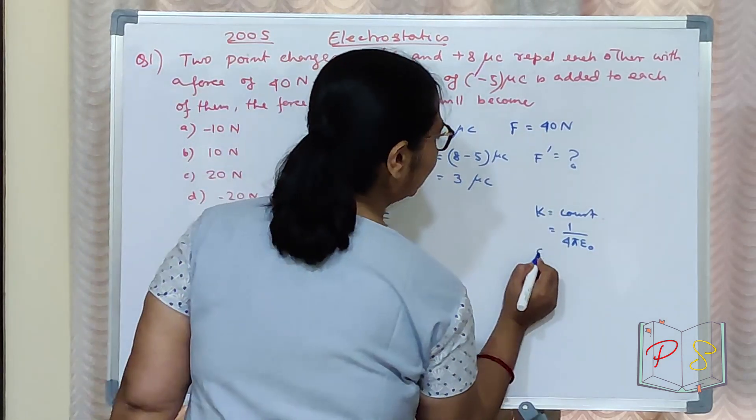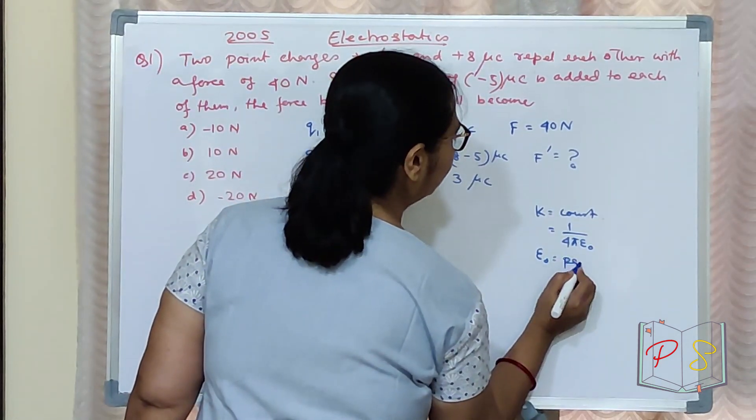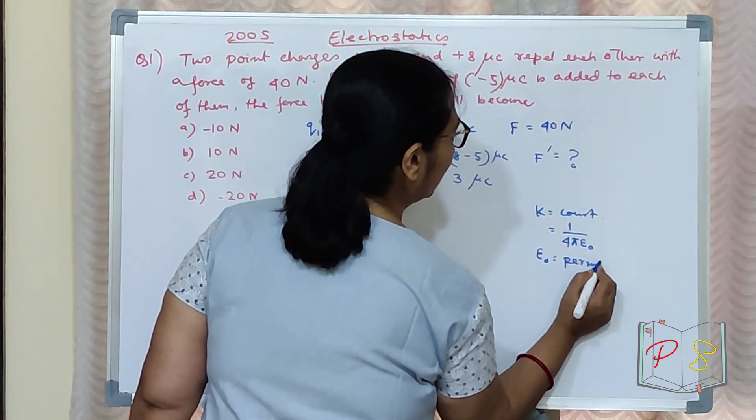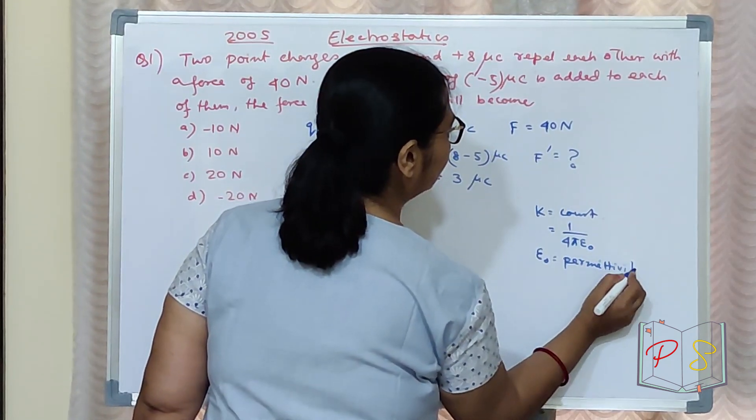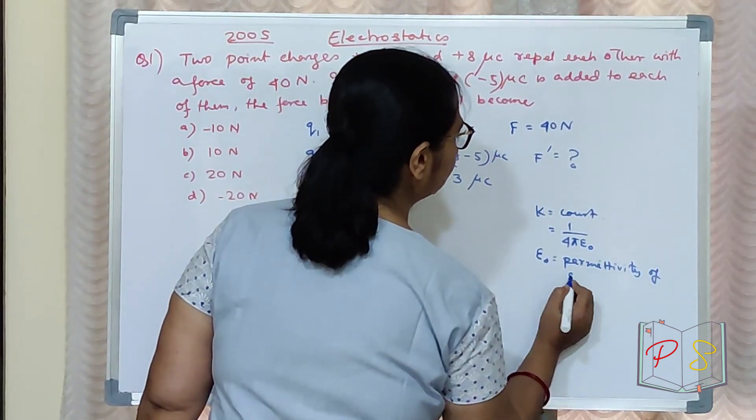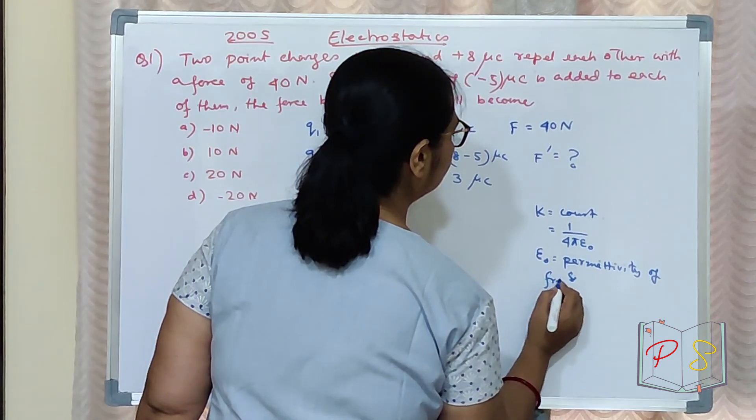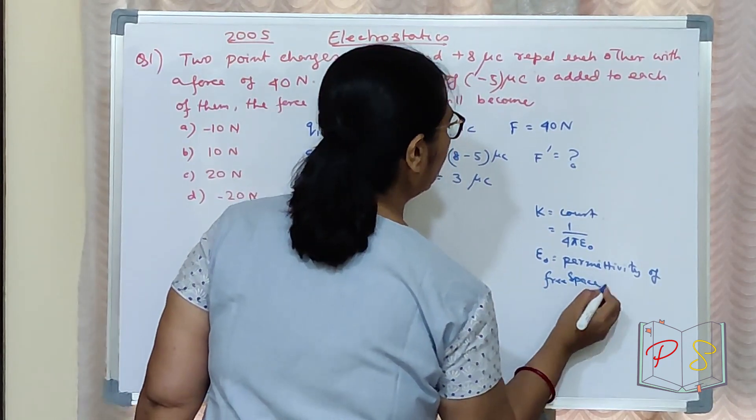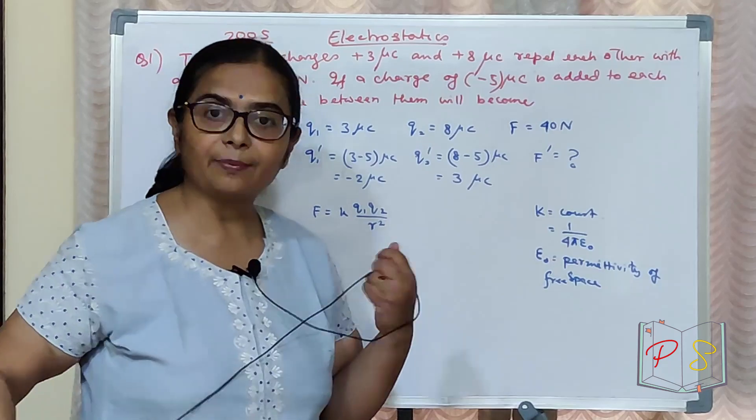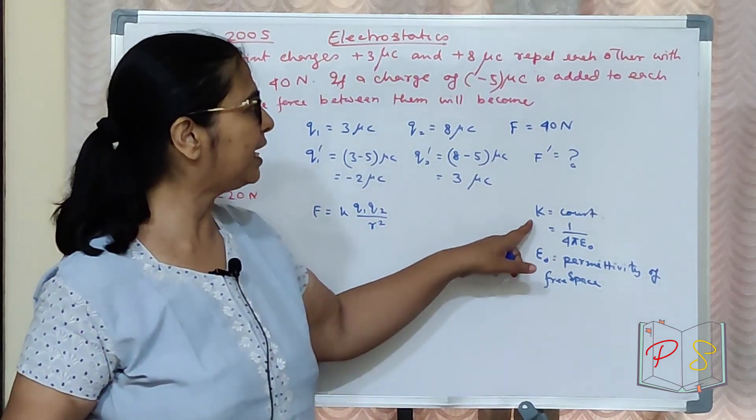Its value is 1 upon 4 pi epsilon naught. Epsilon naught is the permittivity of free space. Do you need to know? Sometimes, you'll need it eventually. Not necessary right now.